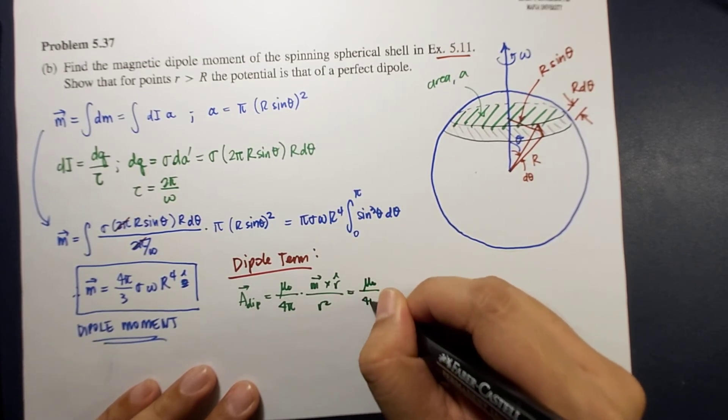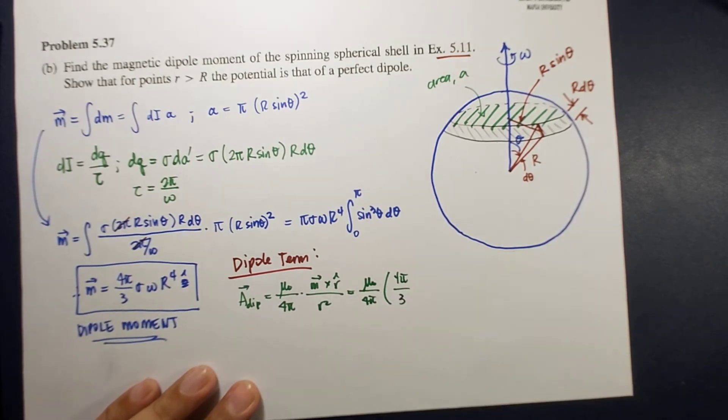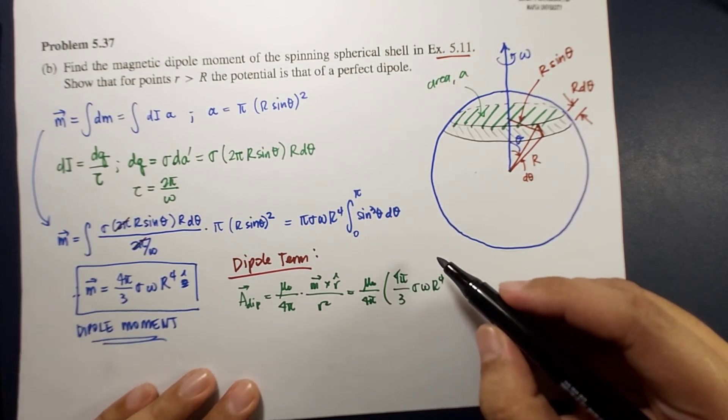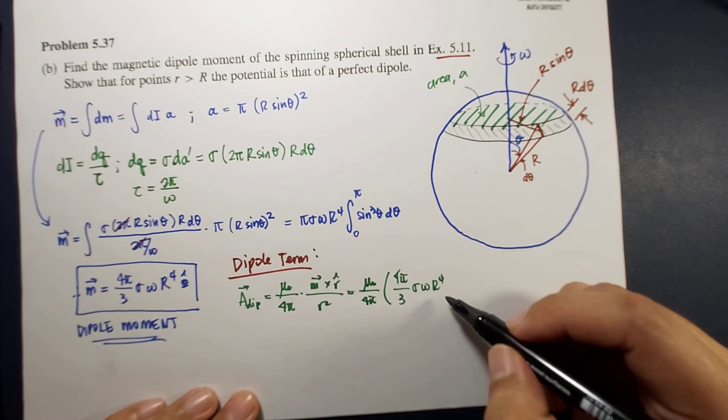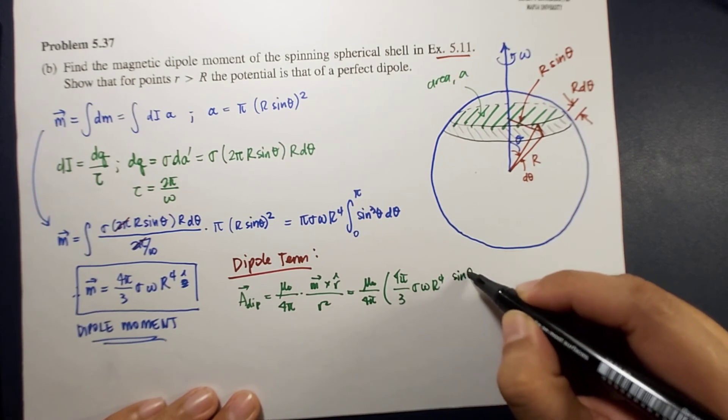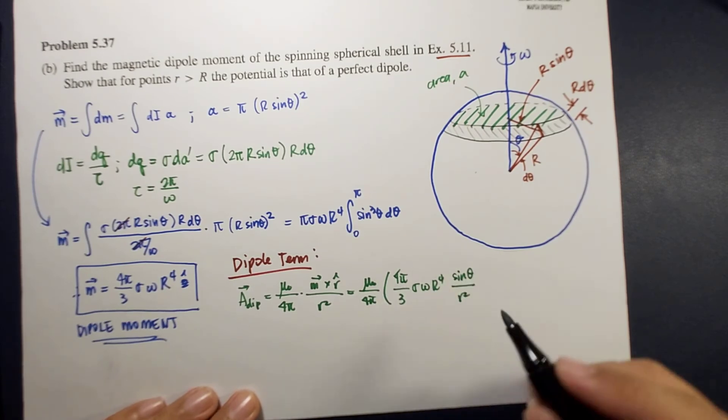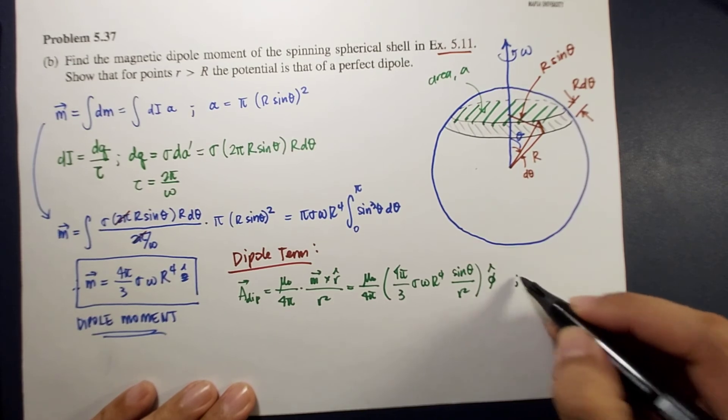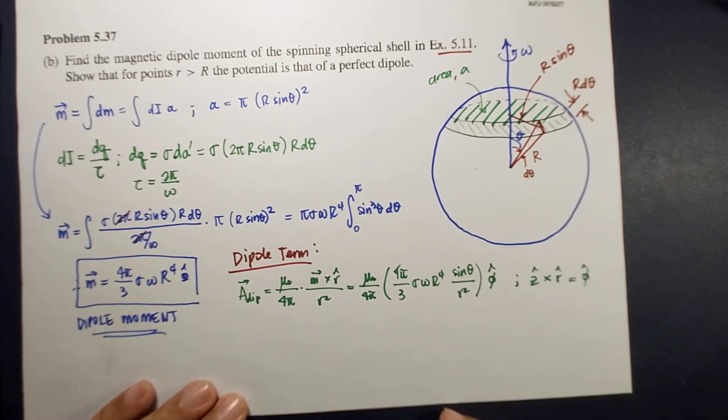So this is equal to μ₀ over 4π times 4π over 3 times sigma omega r to the fourth. There's a hint: z-hat cross r-hat is equal to θ-hat.